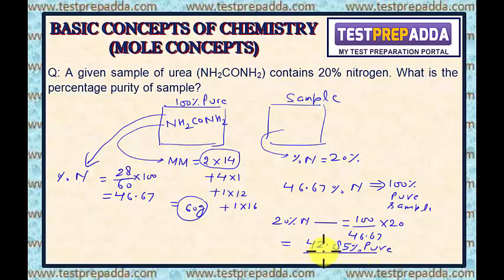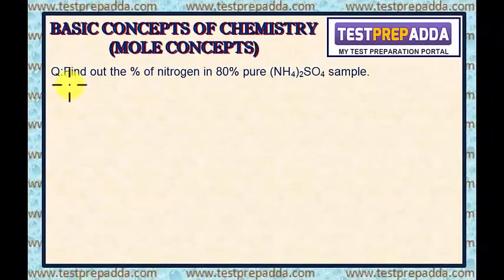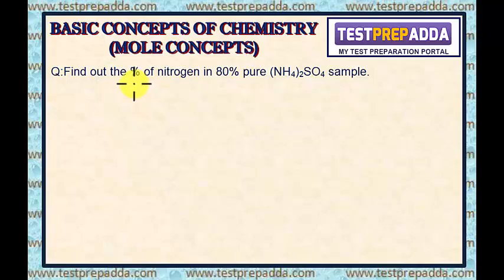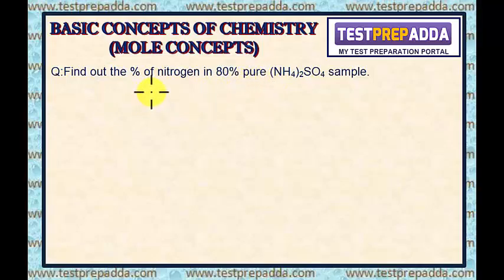Now, to understand the concept of purity in a better manner, I will take another question. The question says: find out the percentage of nitrogen in an 80% pure ammonium sulfate sample. Comparing with the previous question: there, the percentage purity was asked and the percentage of the element was given. Here, the percentage of the element is asked and the percentage purity is given. But the procedure will be the same.